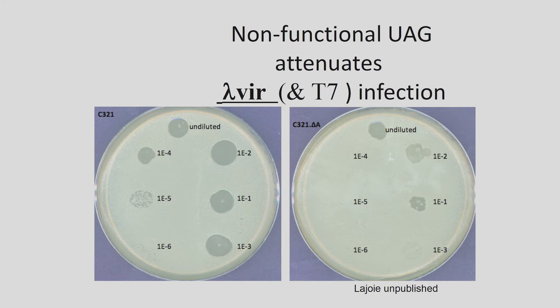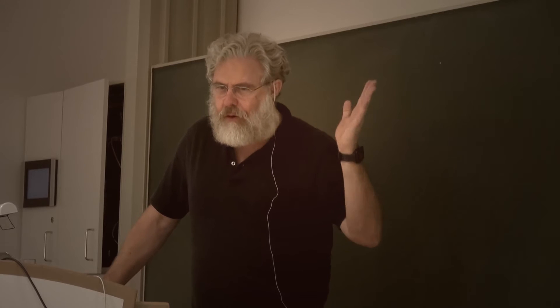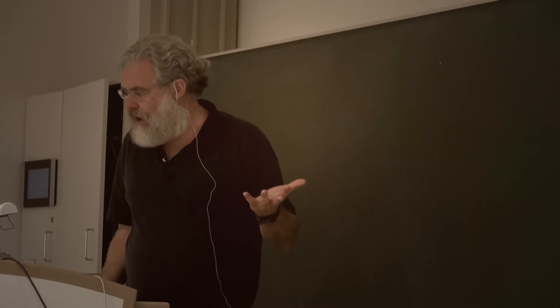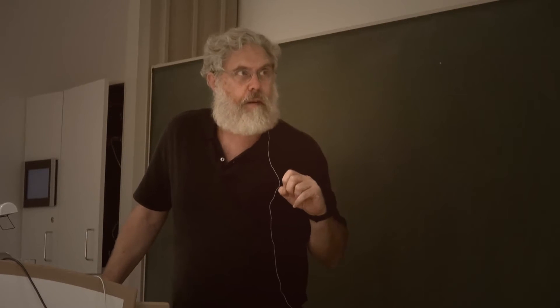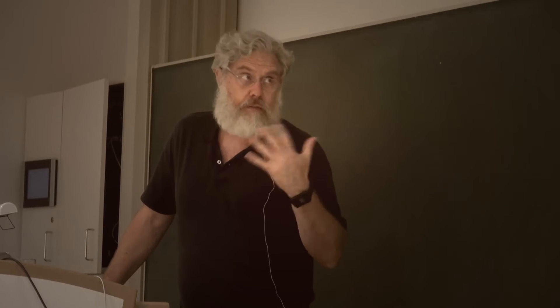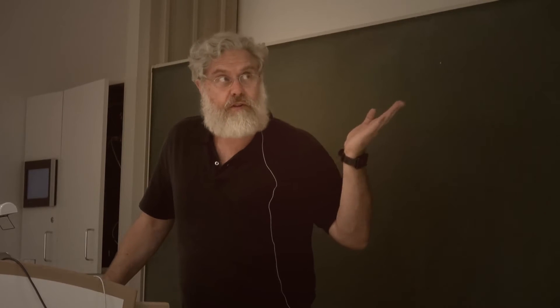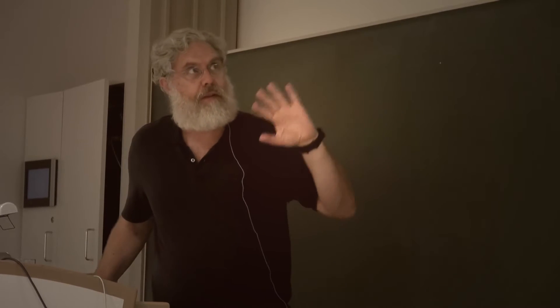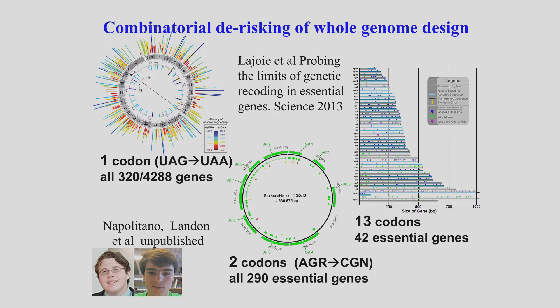This is how we de-risk it combinatorially. If we just made the genome and hoped for the best, it probably wouldn't work. So we have to make thousands of genomes, and along the way we learn all of the problems. For other experiments, not this one, we've made billions of genomes combinatorially for optimizing metabolism. But this story is about making a specific set of codon changes.